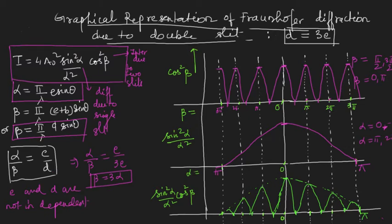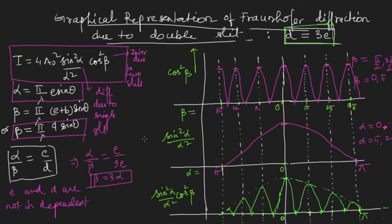An important thing to note is that the intensity of all the other maxima is not the same everywhere — it is decided by the envelope of diffraction due to single slit. The intensity of the maxima decreases and we get the combined pattern. The position of maxima can be obtained by neglecting the effect of slit width, but graphically we can clearly see how the Fraunhofer diffraction pattern due to double slit looks. This is for the case d = 3e, i.e., β = 3α. You can try different combinations and draw the pattern yourself.